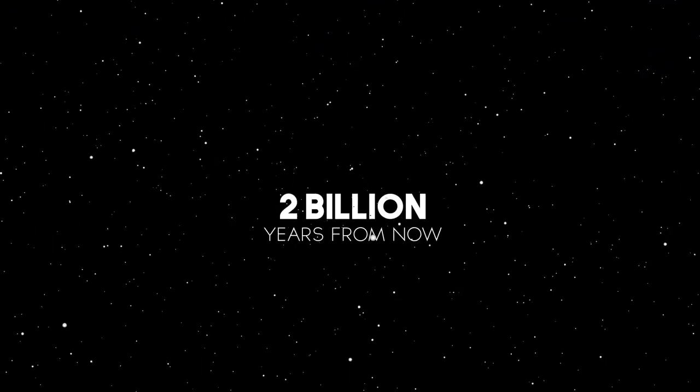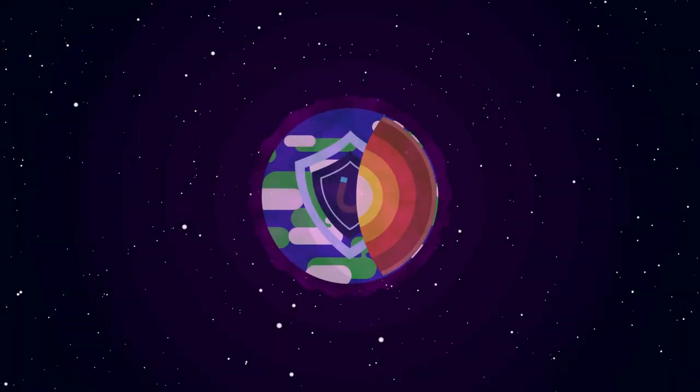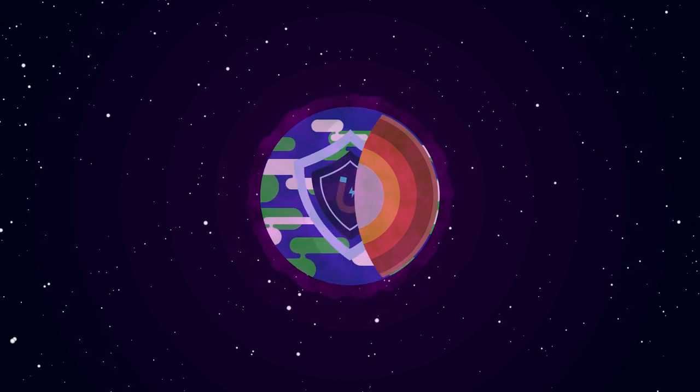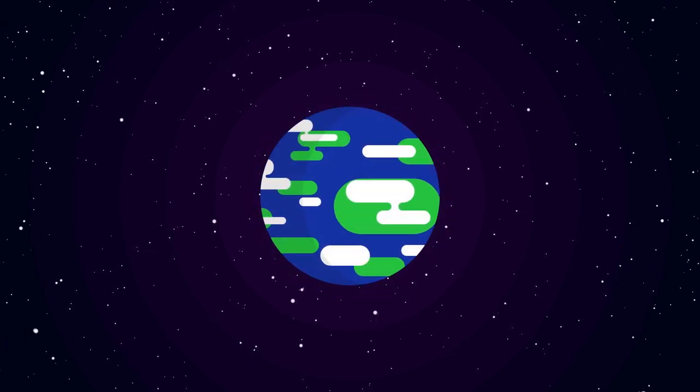Two billion years from now, Earth's core will freeze, and that will cause the planet to lose its magnetic shield, created by the heat of its core, leaving it exposed to the sun.